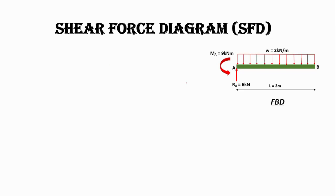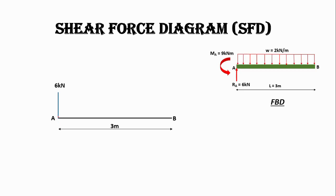Let's draw the shear force diagram by considering the forces acting on beam AB. At A we have a vertical reaction in the upward direction of 6 kilonewtons, so let's draw a line of 6 kilonewtons. Since we have a UDL, we will join this maximum point with the minimum point — the total load on the beam is 2 × 3 = 6 kN acting downward. Because it is a UDL, we draw a straight line joining the two points. This shear force is considered positive with a maximum shear force of 6 kilonewtons.